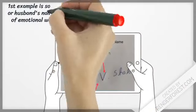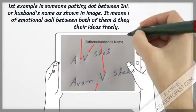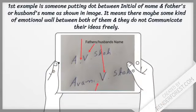The first example is someone putting a dot between the name or initial of their own name and their father's or husband's name, as shown in the image. This means there may be some kind of emotional wall between both of them and they do not communicate their ideas freely.